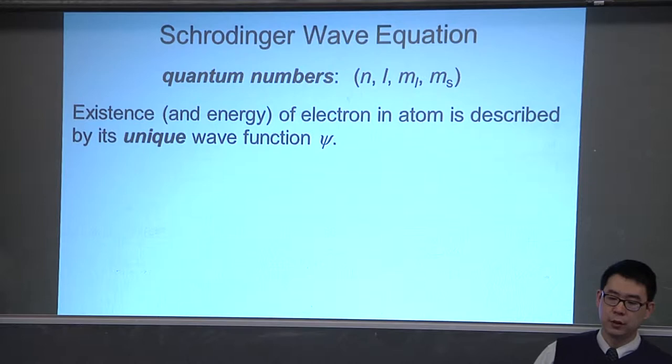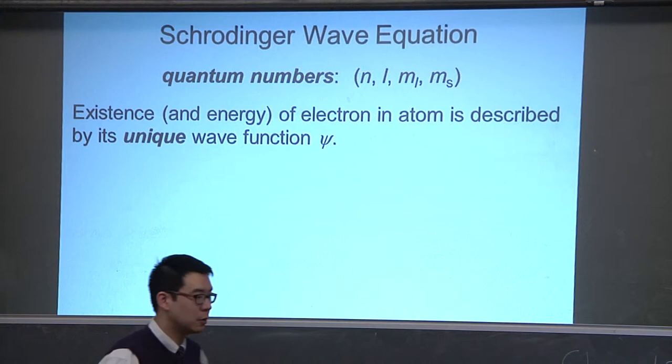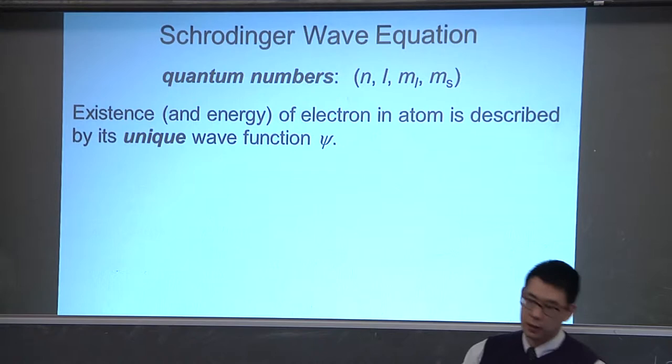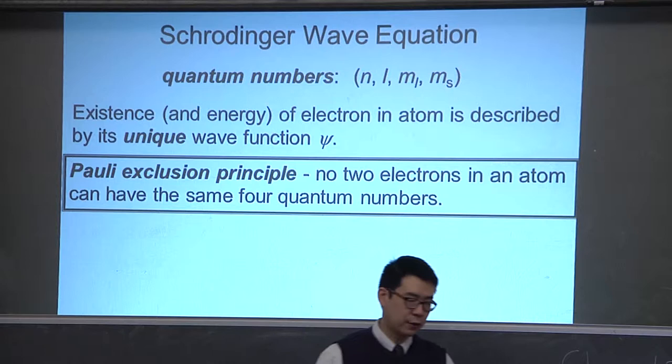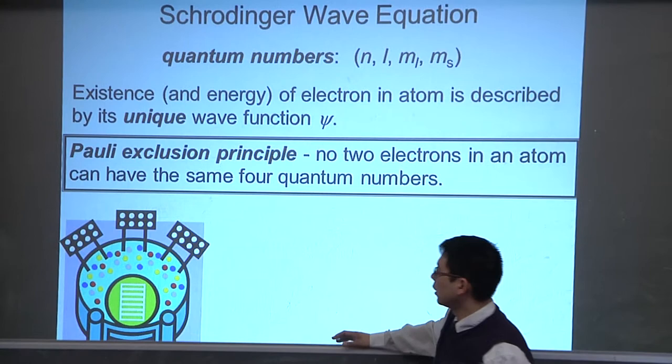If you have an atom like helium, helium has two electrons. One electron will be described by one set of four quantum numbers, and the second electron is going to be described by a different set of four quantum numbers. The Pauli exclusion principle says that no two electrons in an atom have the same exact four quantum numbers — they're unique.